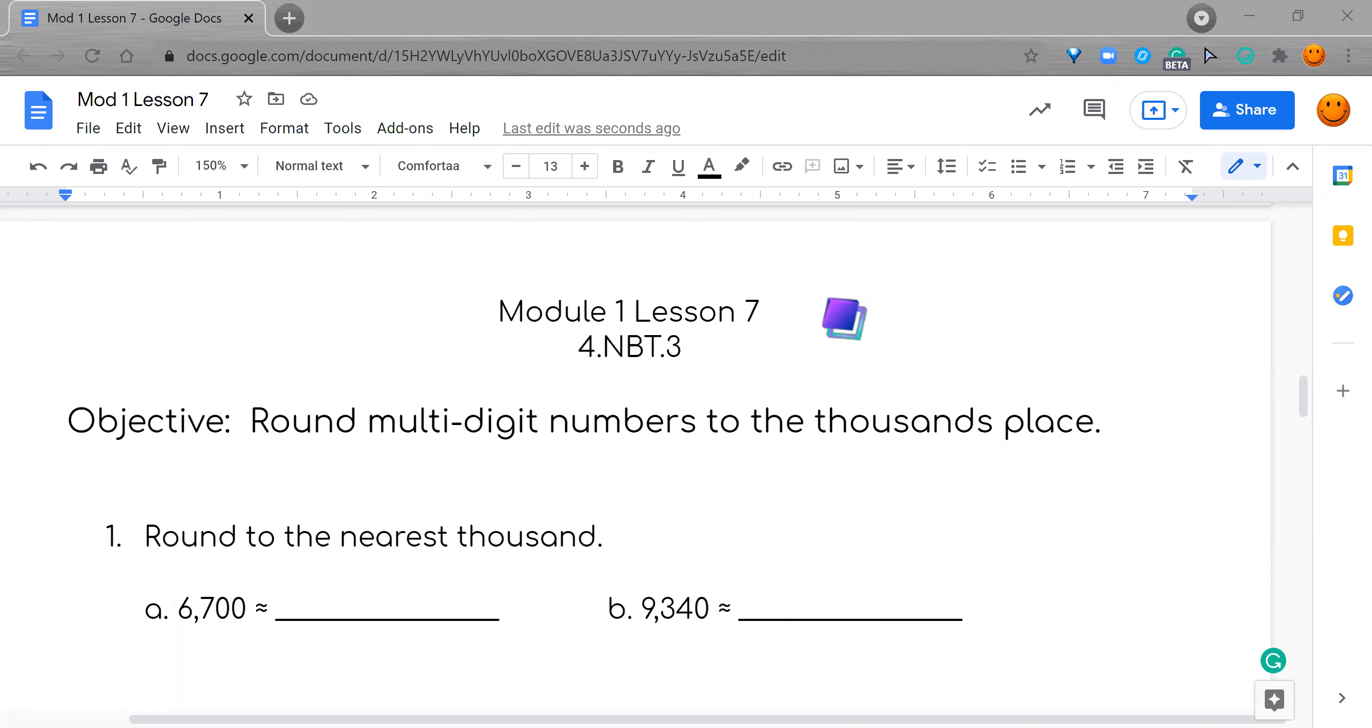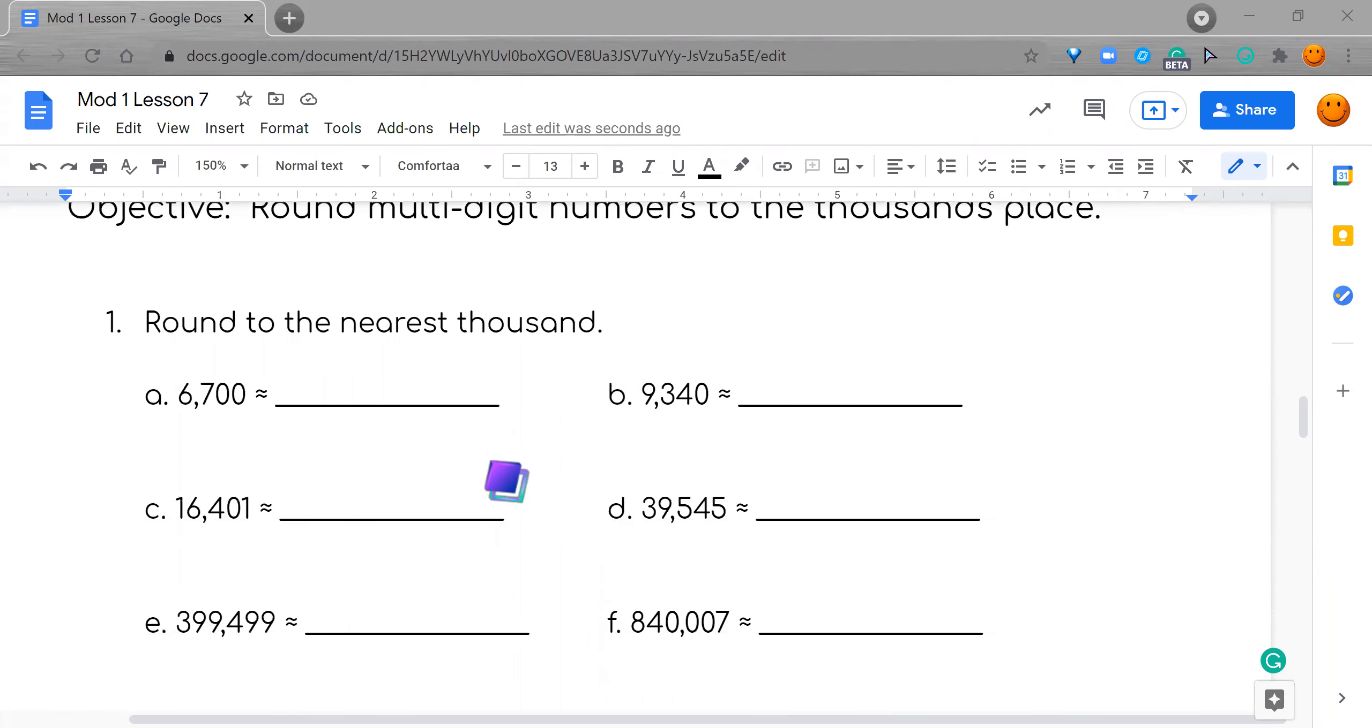The objective of this lesson is to round multi-digit numbers to the thousands place. If you're doing Engage New York, it's also telling you to use a vertical line. I'm just going to show you how to round right now. As we practice our place value, we should know where that is. So we have ones, tens, hundreds, thousands.